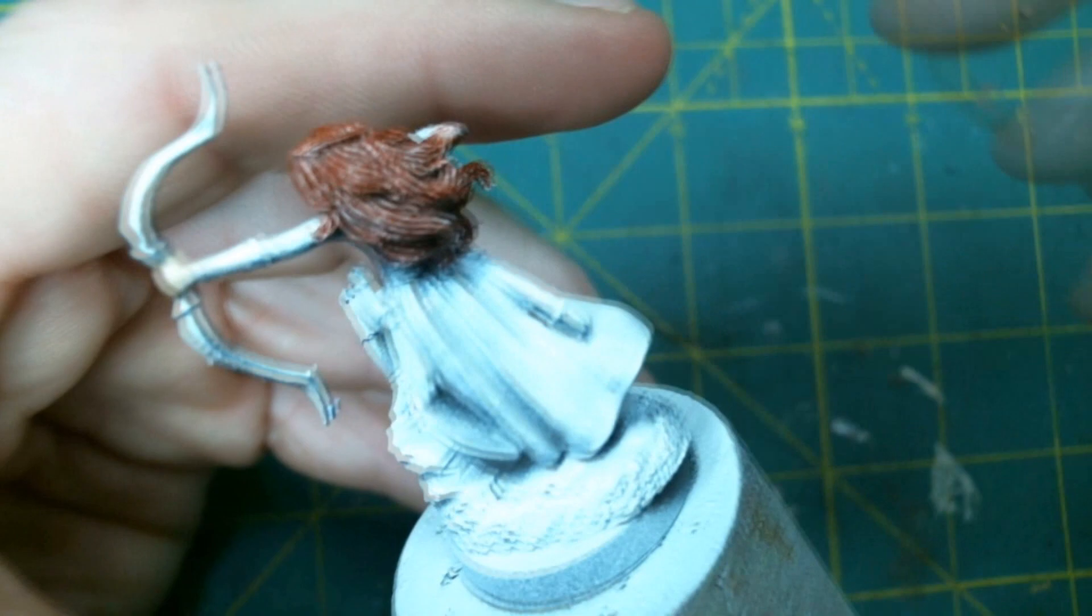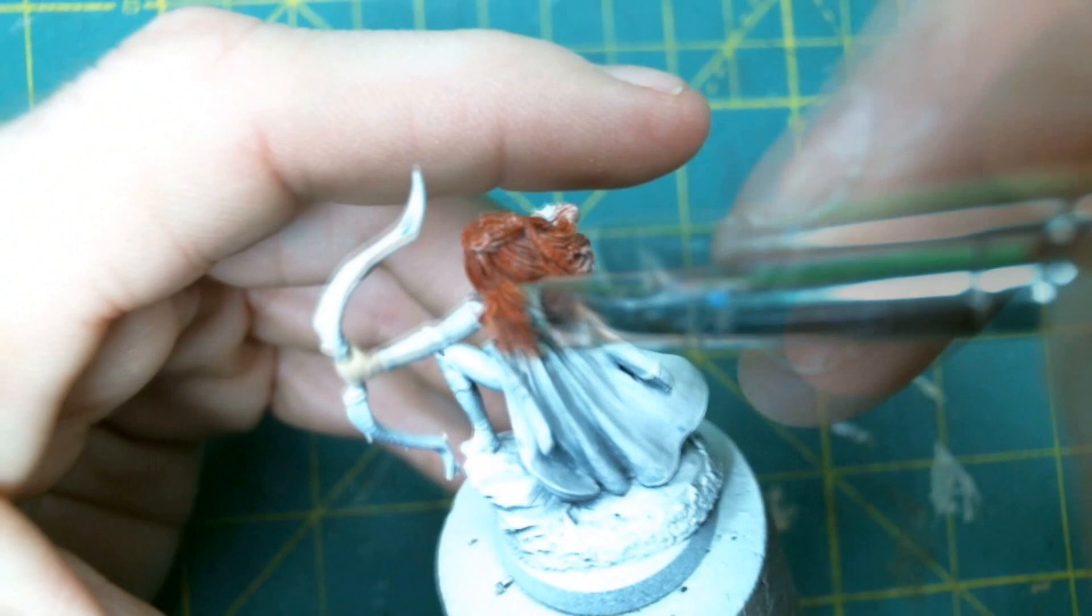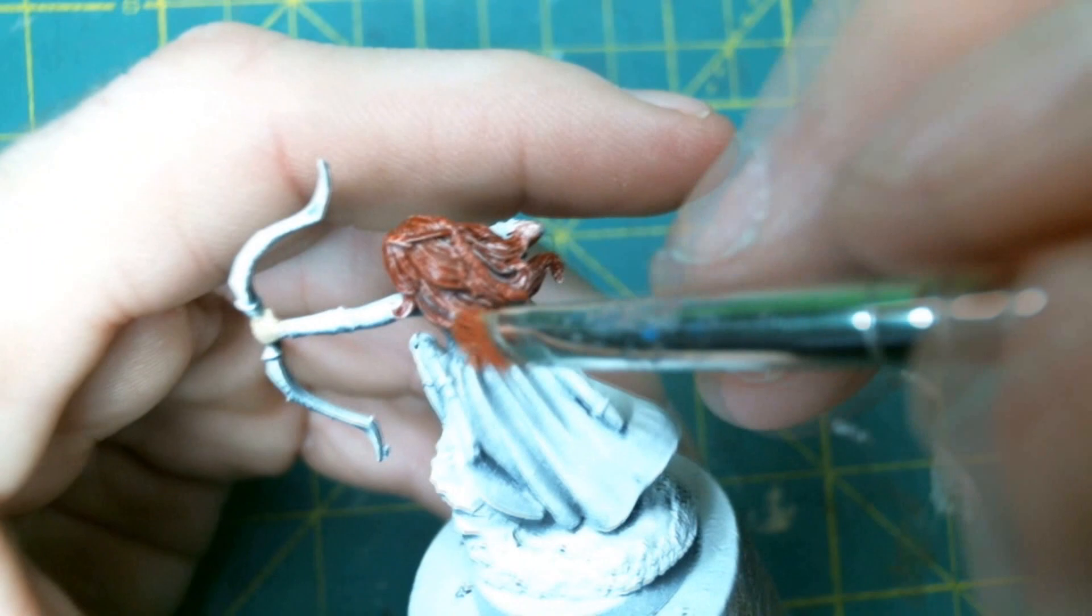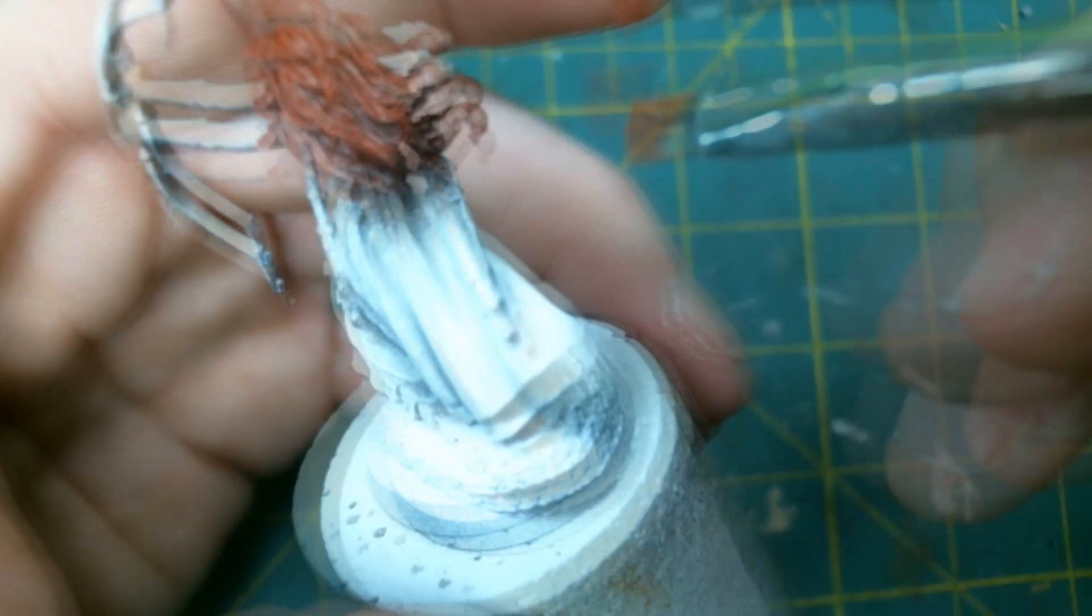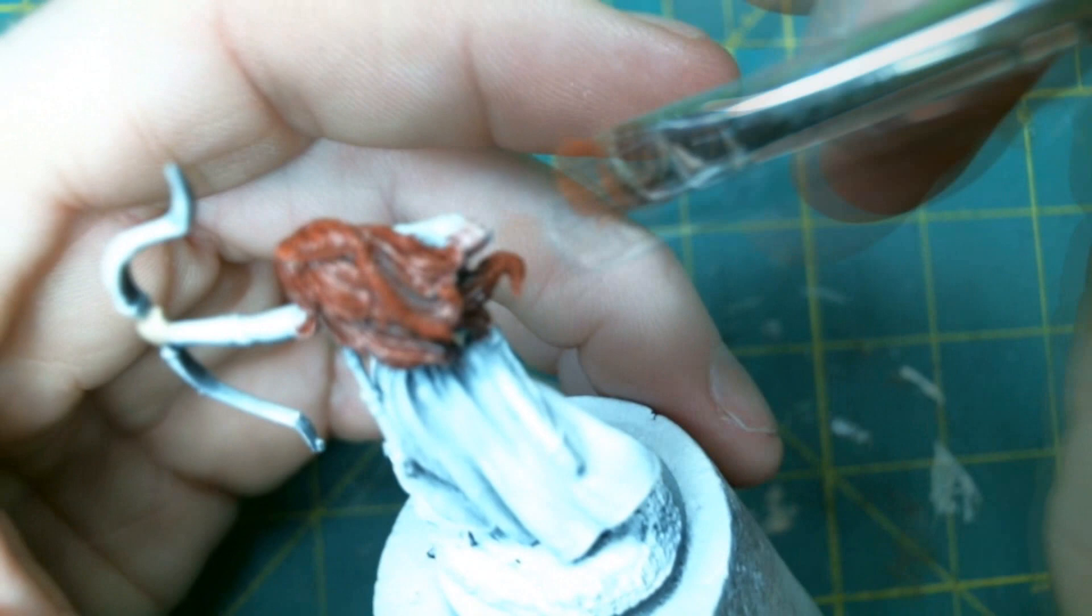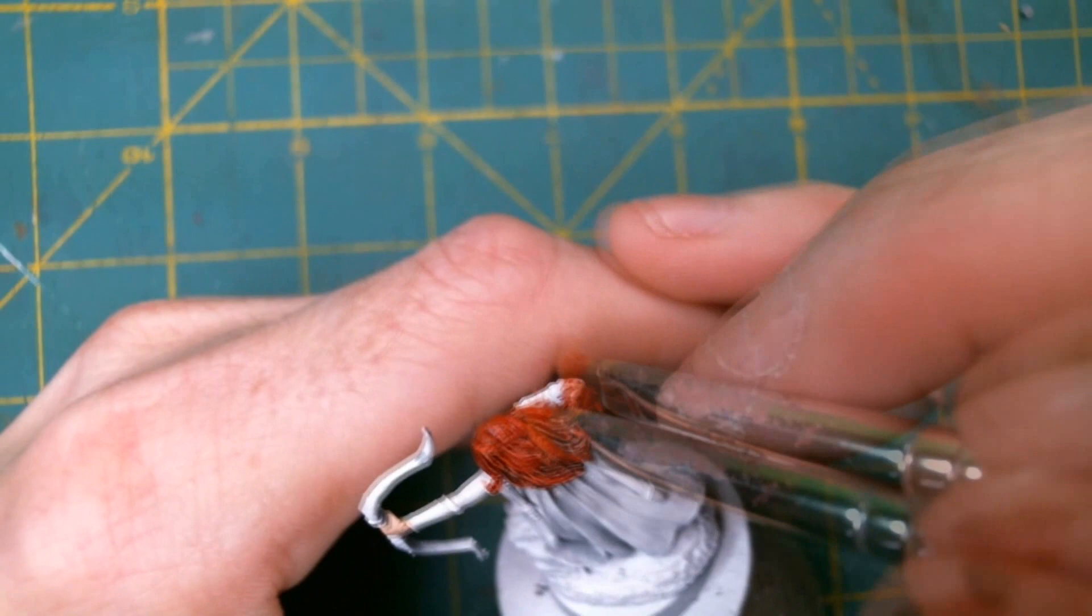After that it's just a matter of dry brushing the rest of the colors of the triad with the highlights going more towards the top of the head. And the first highlight is the Carrot Top Red. And the final color will be Highlight Orange.